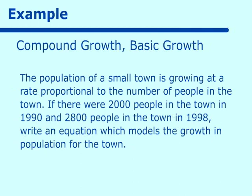If there were 2,000 people in the town in 1990 and 2,800 people in the town in 1998, write an equation which models the growth in population for the town. The other thing we see here is what we call the initial condition, where 2,000 people were in the town in 1990, and then we have another condition that eight years later there were 2,800 people.